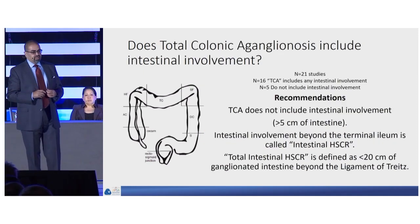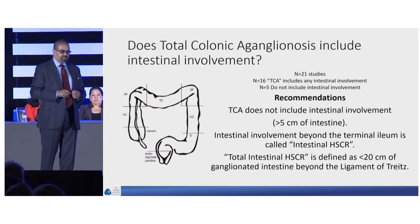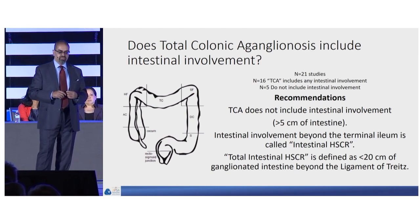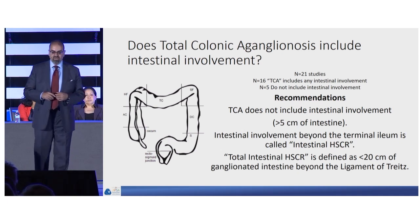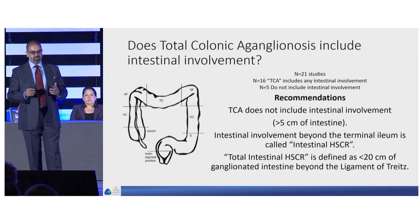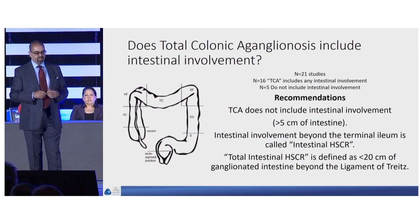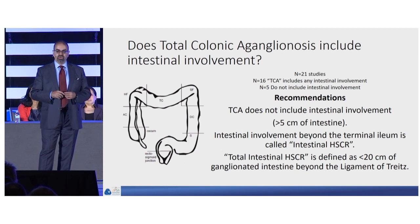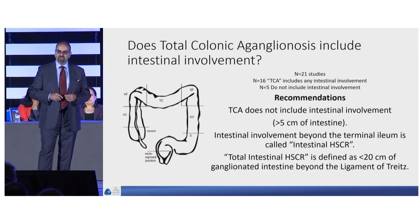Does total colonic aganglionosis include intestinal involvement? Of 21 studies, 16 had total colonic including intestinal involvement and 5 did not. Our recommendation is that total colonic does not include intestinal involvement beyond about 5 centimeters in the intestine, and that intestinal involvement beyond the terminal ileum should be called intestinal Hirschsprung disease. Total intestinal is defined as less than 20 centimeters of ganglionated intestine beyond the ligament of Treitz.